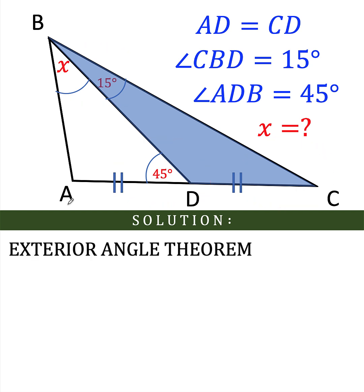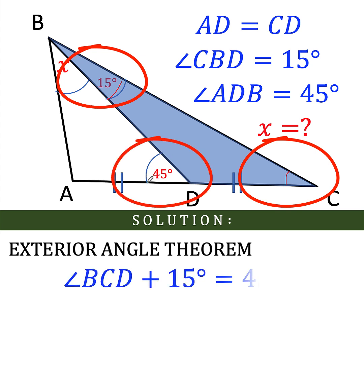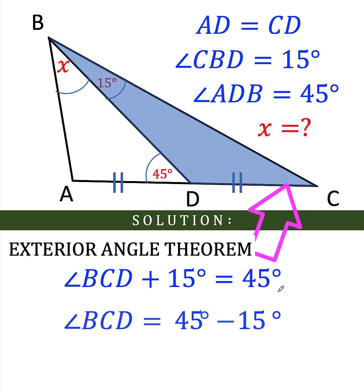From the exterior angle theorem, we know that the sum of this interior angle plus this other interior angle DCB is equal to the measure of the exterior angle with a measure of 45 degrees. And so solving for angle BCD, that is equal to 30 degrees. So we now know that the measure of this angle is 30 degrees.